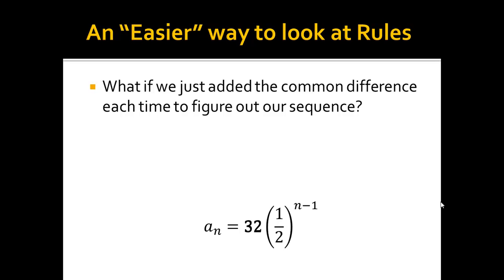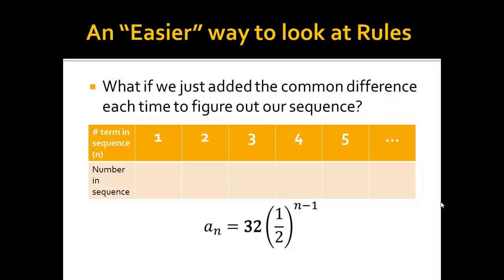And what if we just added the common difference each time to figure out our sequence? This is just another way we can look at this. When I say added, I don't mean like we're using addition, like we're actually just tacking it on there. Well, the first term is going to be 32, not a big deal.